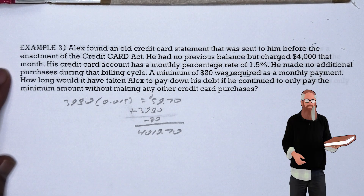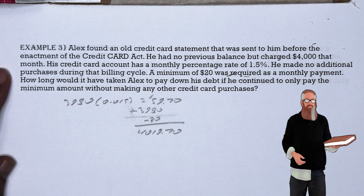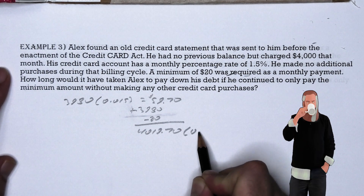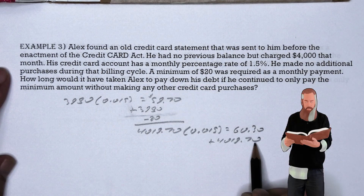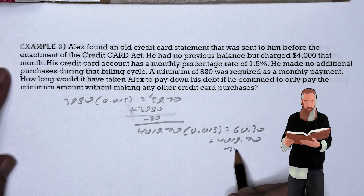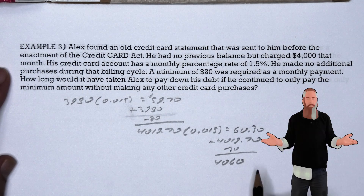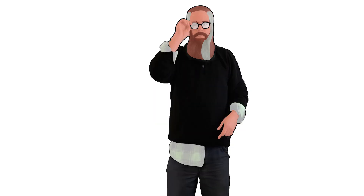Let's try this for one more month of the billing cycle. We find 1.5% of the balance, which is $60.30. Adding the carried-over balance and subtracting the $20 payment, they now owe $4,060. Credit card users who do not pay their bill in full are charged a finance charge for the convenience of extra payment time.